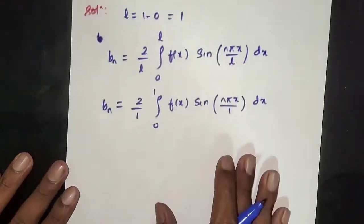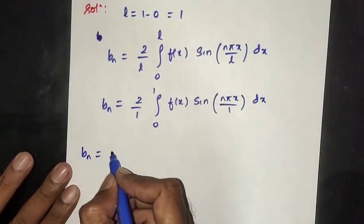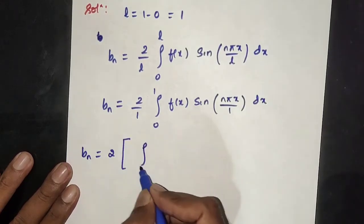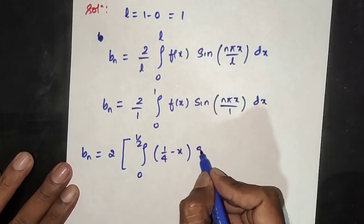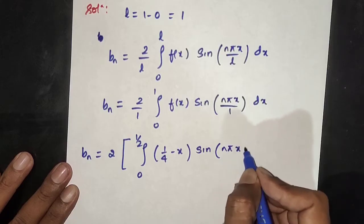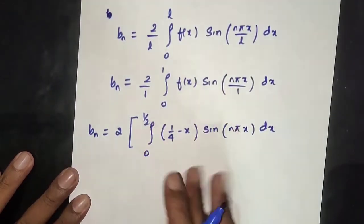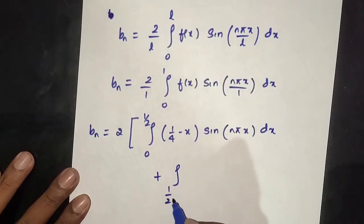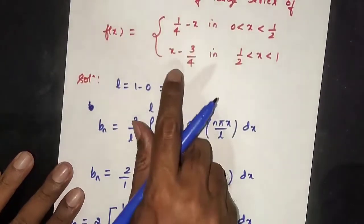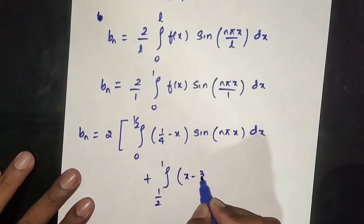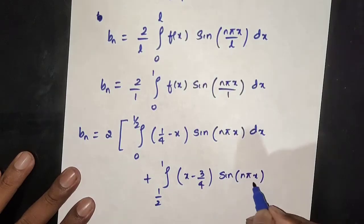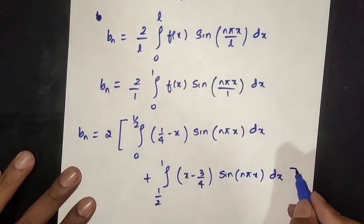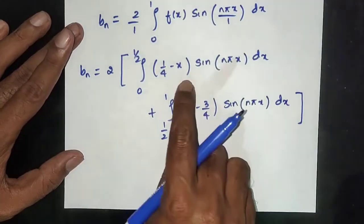Since l equals 1, bn equals 2 times the integral from 0 to 1/2 of f(x) sin(n pi x) dx. f(x) equals 1/4 minus x from 0 to 1/2, and x minus 3/4 from 1/2 to 1. So bn equals 2 into the integral from 0 to 1/2 of (1/4 minus x) sin(n pi x) dx plus integral from 1/2 to 1 of (x minus 3/4) sin(n pi x) dx.